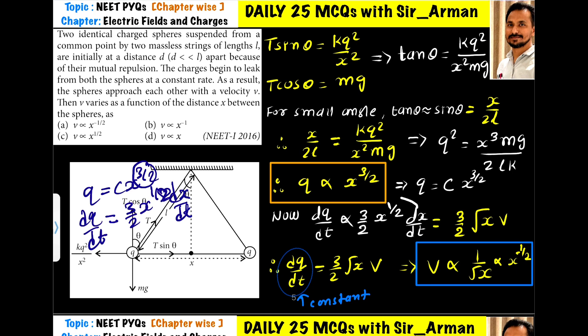We have this expression. We can also write (3/2)·x^(1/2) as (3/2)·√x, and dx/dt is the velocity, which is what we want. We are rewriting this expression here.